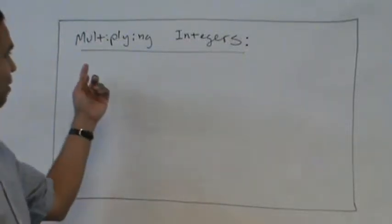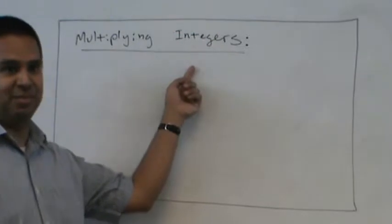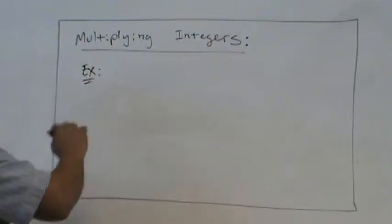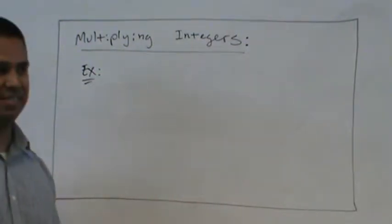All right, here we go. Multiplying integers, take two. The rules for multiplying integers, very easy.